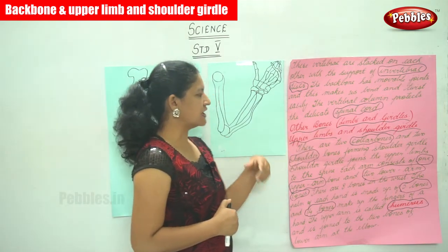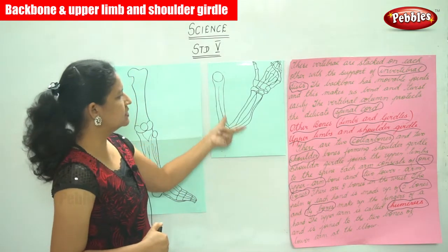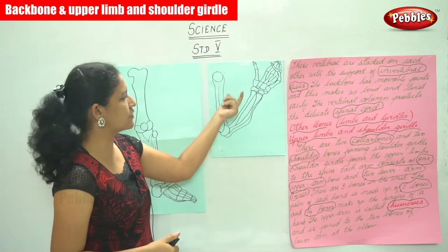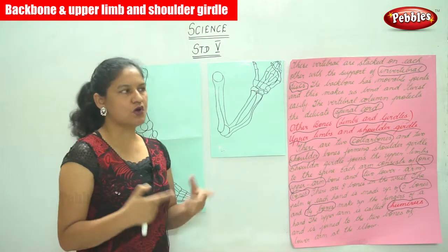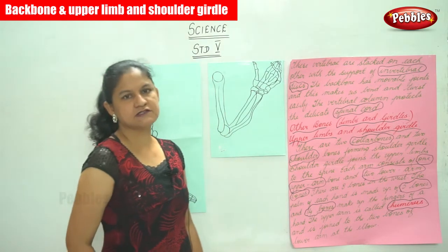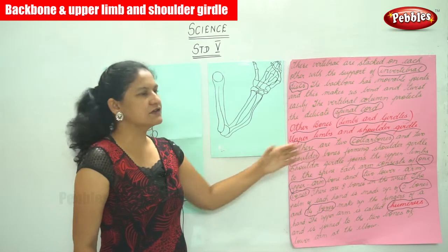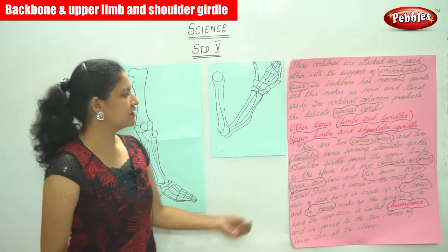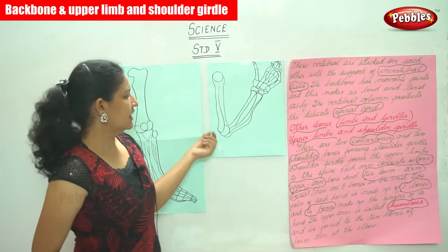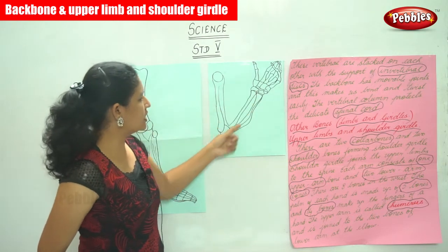Talking about the other bones — the limbs and the girdles. For the upper limbs and the shoulder girdle, there are two collar bones and two shoulder bones forming the shoulder girdle. The shoulder girdle joins the upper limbs to the spine. Each arm consists of one upper arm bone and two lower arm bones.